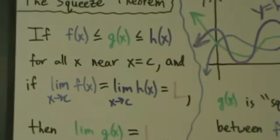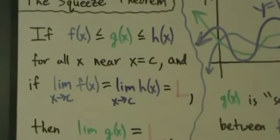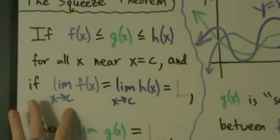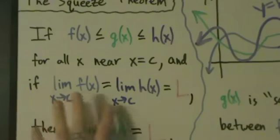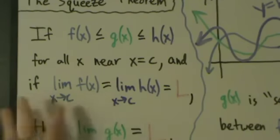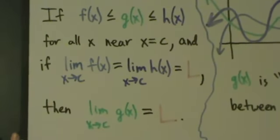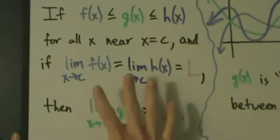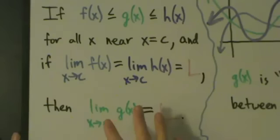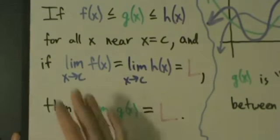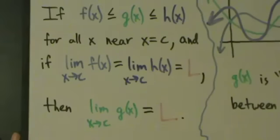This also applies to one-sided limits. Here this is stated with two-sided limits — limit as x approaches c — but you could also have limits from the left or limits from the right. If all the limits are one-sided, like if they're all from the left, that'll still work. If all these limits are from the right, that'll still work.